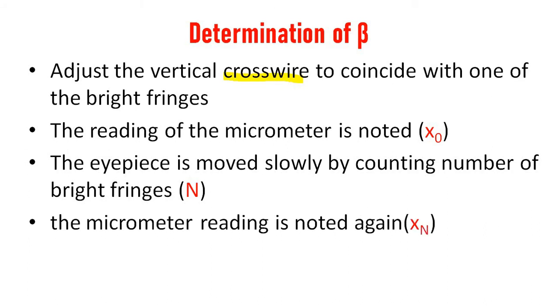Then the crosswire is at the nth fringe. We need to take micrometer reading of this nth fringe. Let it be xn. The first fringe reading is x0, nth fringe is xn. The number of fringes is n. So fringe width beta equals xn minus x0 by n. This is how we can calculate beta.